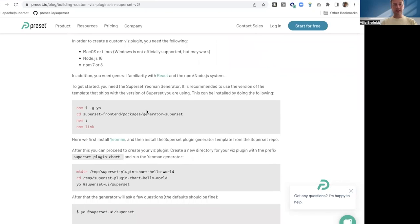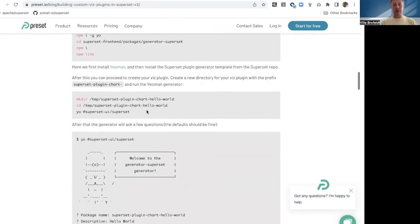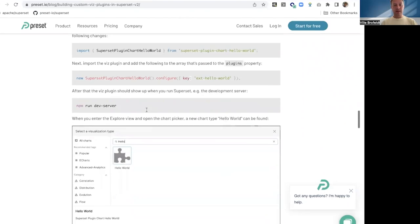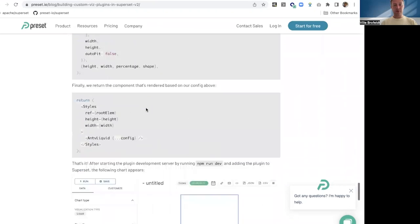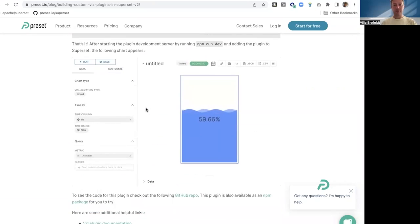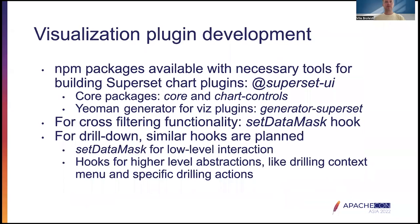The example uses the Superset Yeoman generator to create a hello world chart, then extends and customizes it to produce a real chart. If you're interested in visualization plugin development, I recommend checking out that blog. To add cross-filtering support to your plugin, you need to leverage the SetDataMask hook. This hook makes it possible to both add filters to other charts and re-trigger the chart's own query, which is useful for adding pagination or drill-down-like functionality.